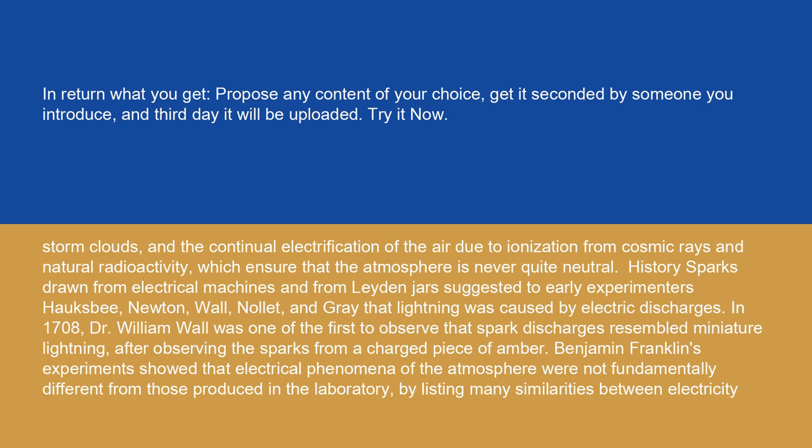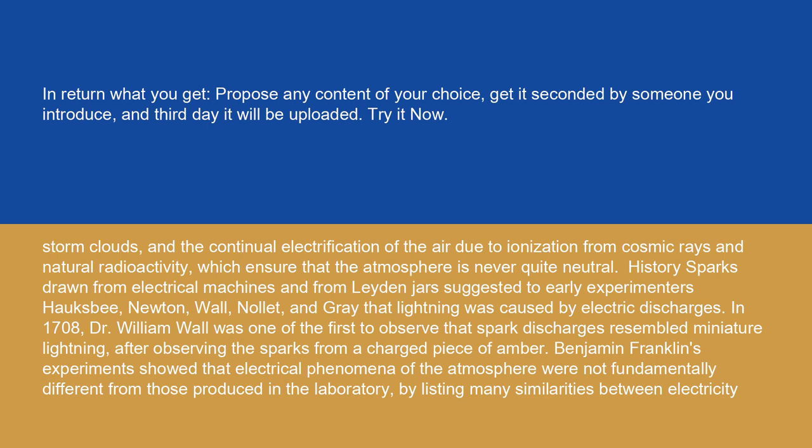After observing the sparks from a charged piece of amber, Benjamin Franklin's experiments showed that electrical phenomena of the atmosphere were not fundamentally different from those produced in the laboratory, by listing many similarities between electricity and lightning. By 1749, Franklin observed lightning to possess almost all the properties observable in electrical machines. In July 1750, Franklin hypothesized that electricity could be taken from clouds via a tall metal aerial with a sharp point. Before Franklin could carry out his experiment, in 1752 Thomas-François Dalibard erected a 40-foot (12 m) iron rod at Marly-la-Ville near Paris, drawing sparks from a passing cloud. In May 1752, Dalibard affirmed that Franklin's theory was correct.